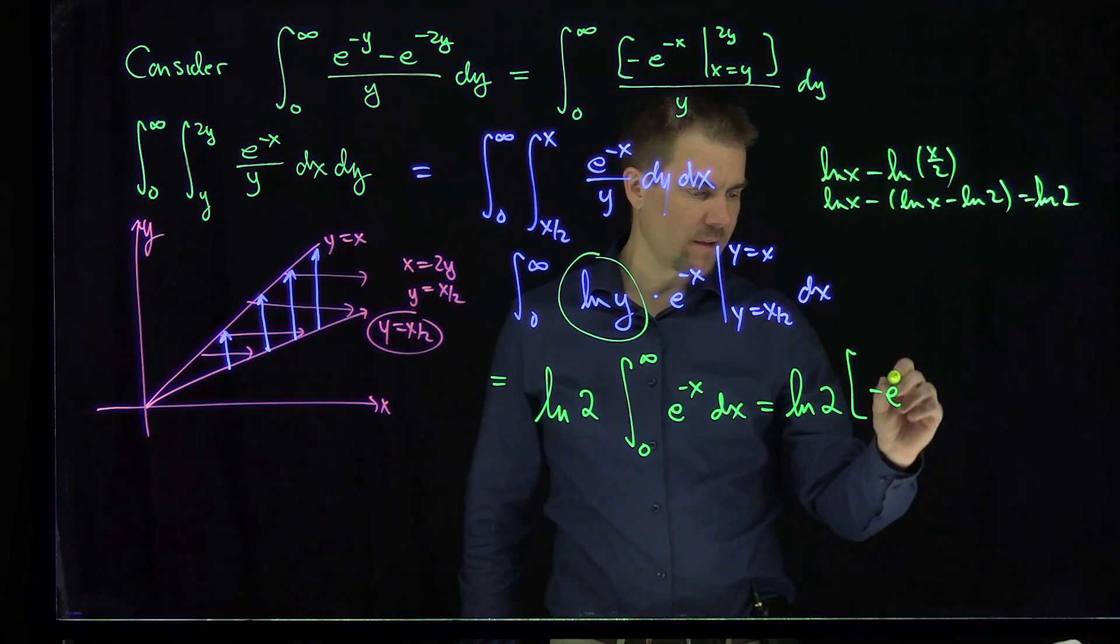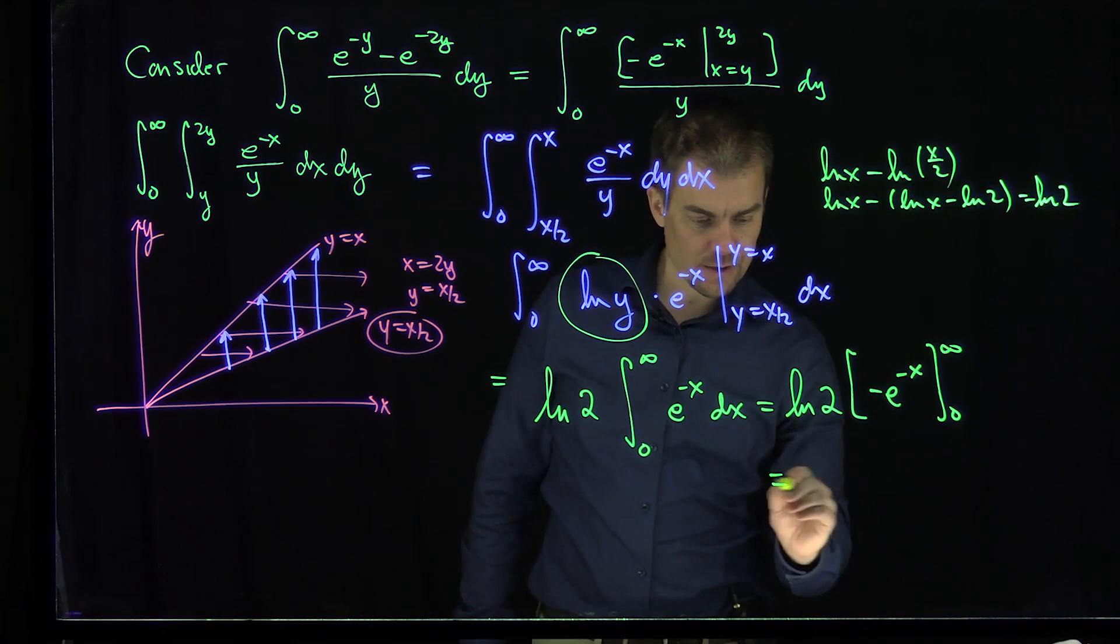It's just a probability density function. We know it's going to be 1. This is ln(2)·[-e^(-x)] from 0 to infinity. And indeed, we see the top limit is 0, the bottom limit is 1.